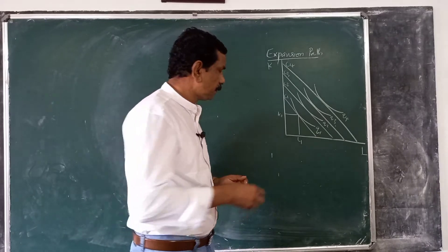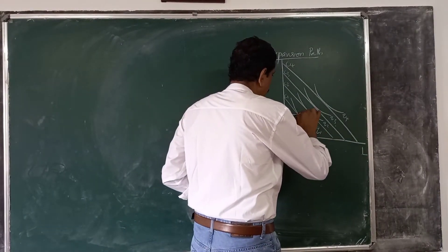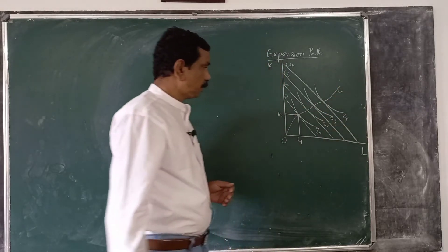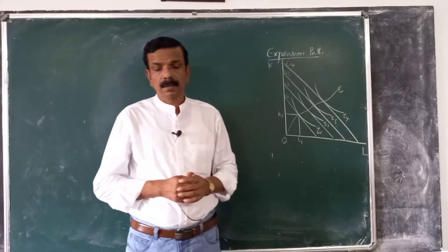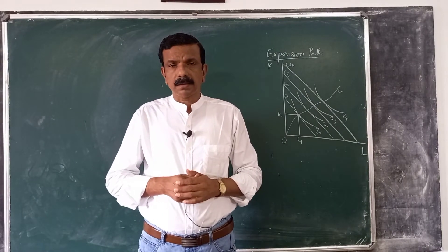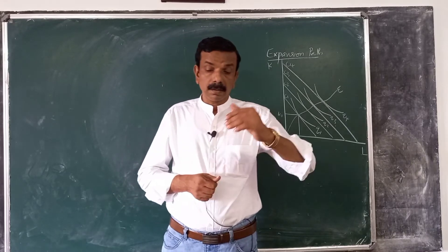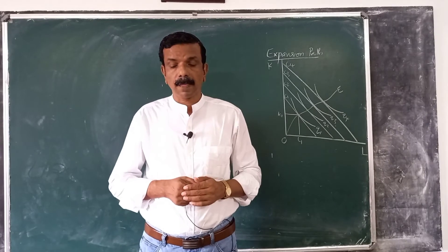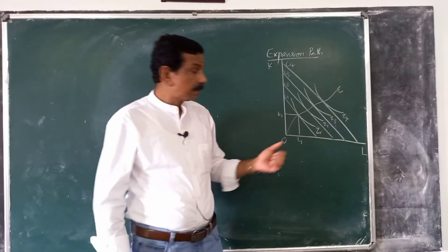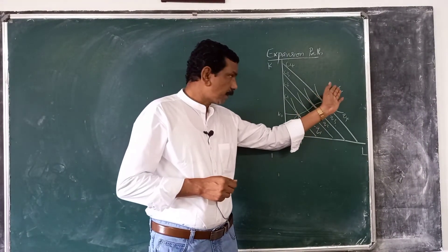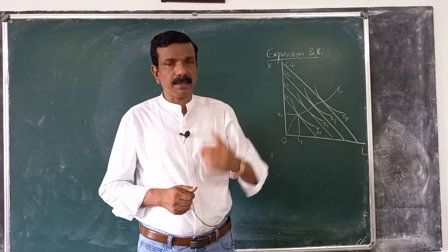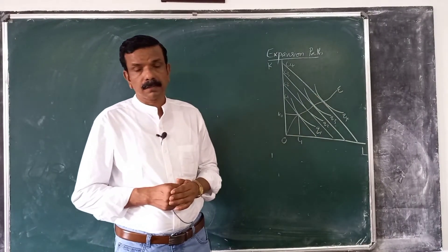Now, if we join together these tangency points, we get the expansion path. It is known as the expansion path because it records how inputs expand as output expands, holding the prices of inputs — W and R — constant.